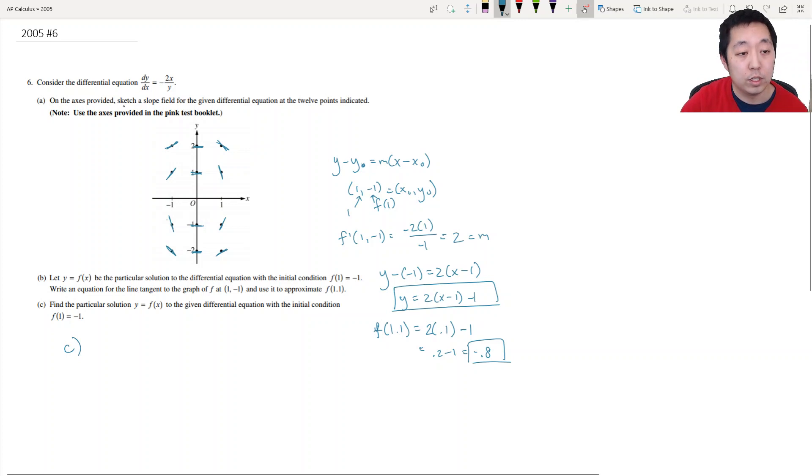And find a particular solution to this differential equation. So the only technique available to you is called separation of variables. I'm going to bring the y up here and the dx up to this side. So both sides look like integrals. So it's y dy is equal to negative 2x dx.